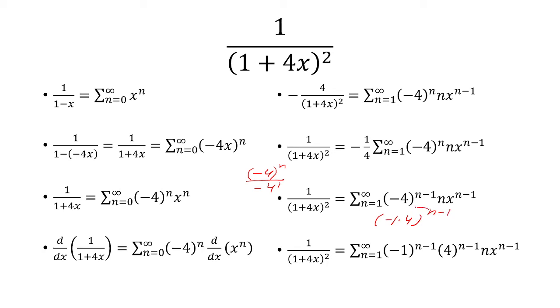And then you're going to apply the exponent to both the negative 1 and the 4. So that turns into negative 1 to the n minus 1 times 4 to the n minus 1, and then times n times x to the n minus 1.